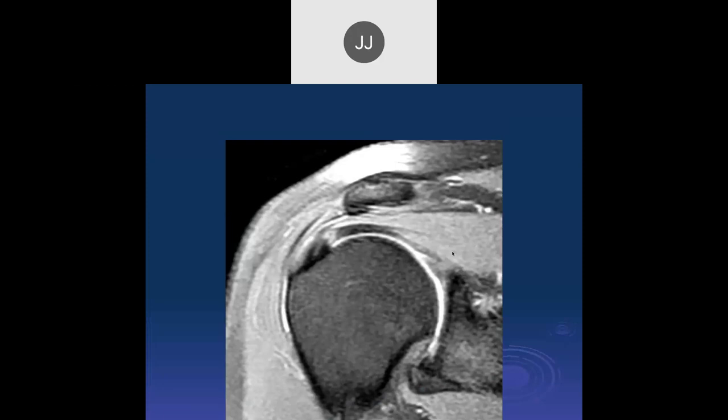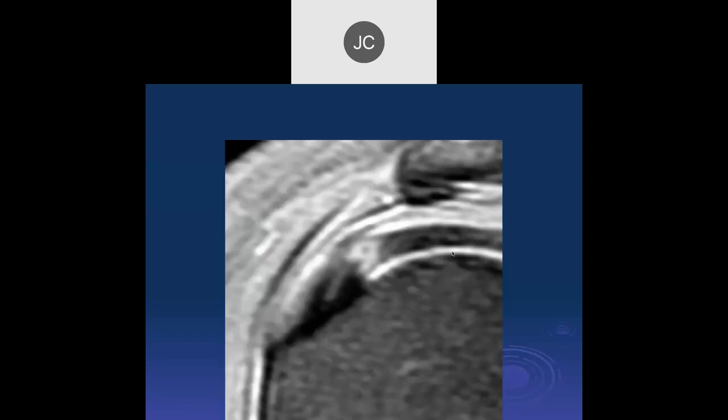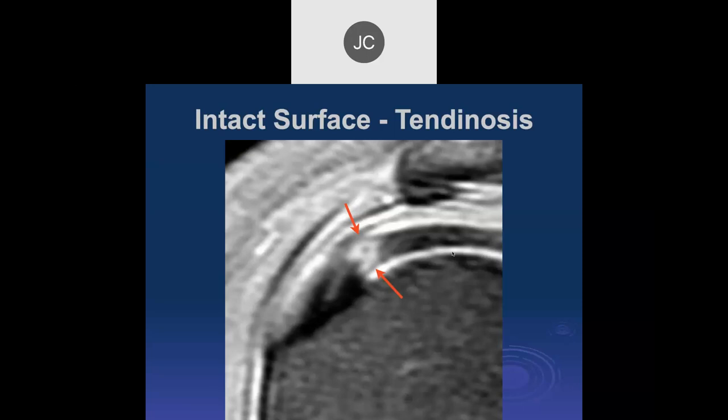That's a first-degree strain. We have a coronal PD fat-sat. There's increased signal within the supraspinatus tendon just proximal to the footplate, but both surfaces look grossly intact. This was tendinosis — an intrasubstance situation.